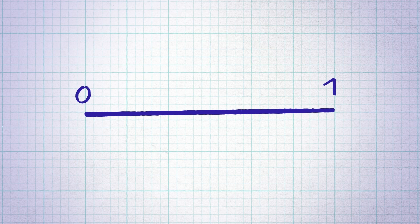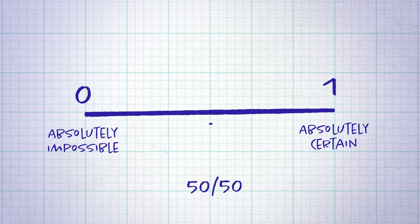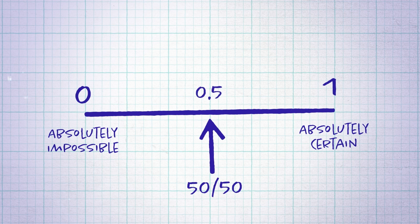When we talk about probability we use percentages, or more often decimals between 0 and 1. Zero means absolutely impossible and 1 means absolutely certain. If something's 50/50, it's about as likely to happen as not happen — it's got a probability of 0.5.